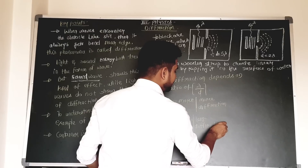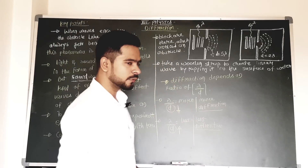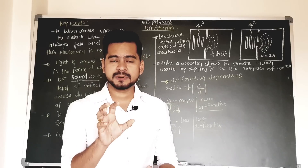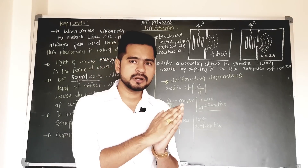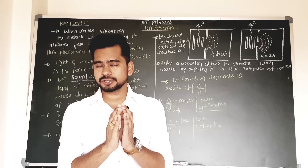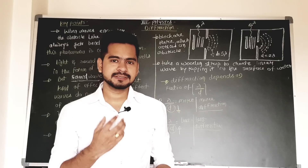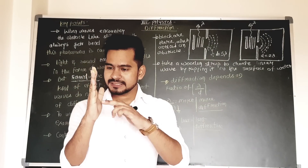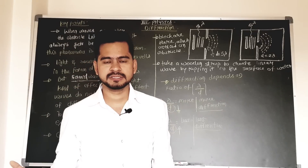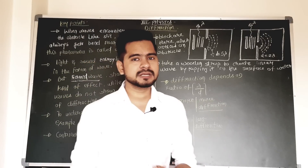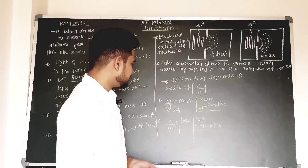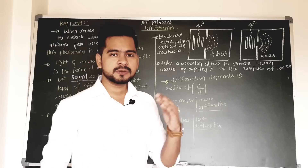Please store this in your mind because it is a very important phenomenon related to diffraction. Diffraction always depends on λ/d. If the ratio is more, there is greater diffraction because d is less — the smaller the gap, the more the diffraction. This is just like how sound waves easily diffract around the gap of a door and reach the person on the other side, but light waves cannot do this.